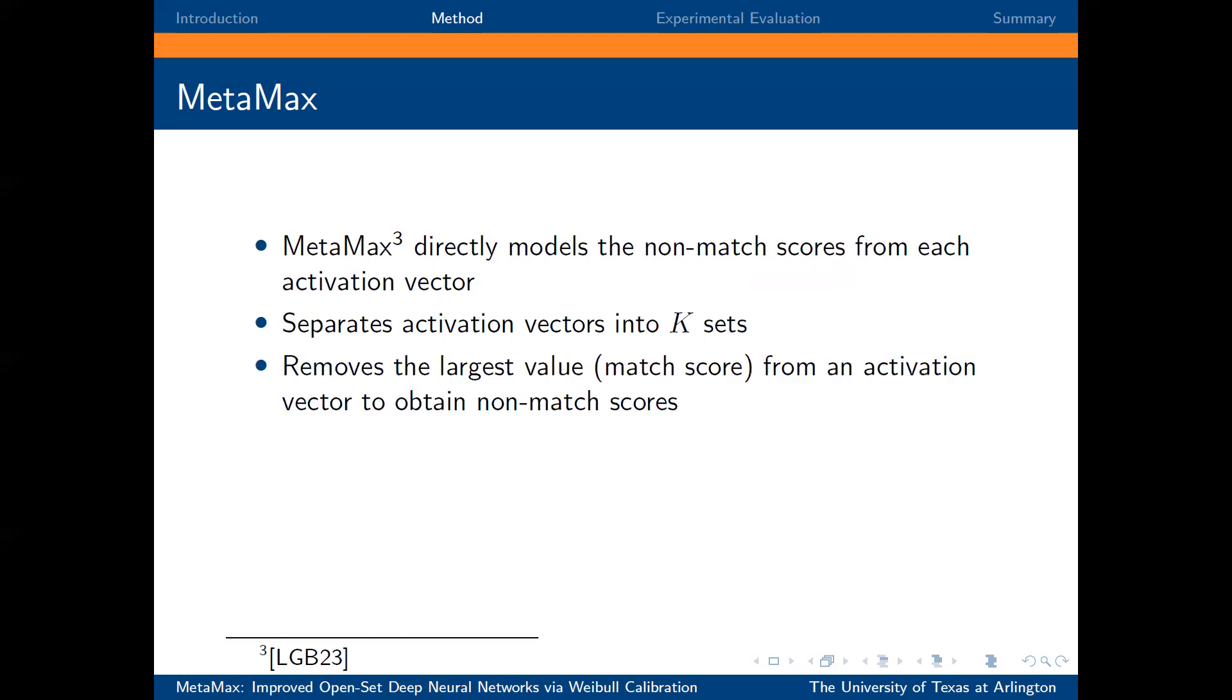For each vector set, we remove the column with the largest probability value, which indicates the match score. This leaves us with the non-matched scores. We concatenate all the non-matched scores to obtain a non-matched distribution, and we use this distribution to build a Weibull model.